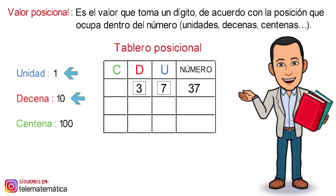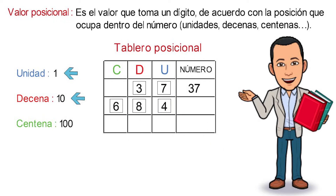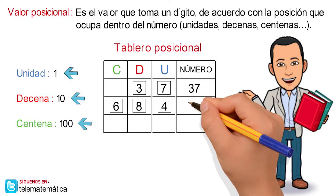Second example: we have the digit 4, the digit 8, and the digit 6. The value 4 is in the column of the units. The digit 8 is in the column of the tens, so this value becomes 80. And the digit 6 is in the column of the hundreds, so this value becomes 600. Then, adding 600 plus 80 plus 4, we get the number 684.